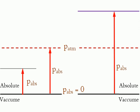Most pressure measuring devices are calibrated to read zero in the atmosphere, and so they indicate the difference between the absolute pressure and the local atmospheric pressure. This difference is called the gauge pressure.